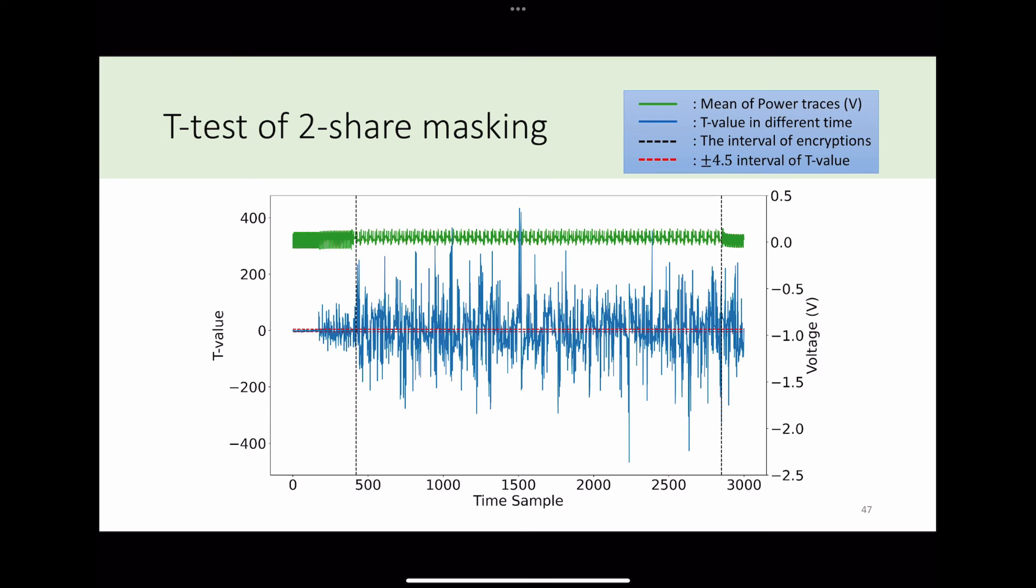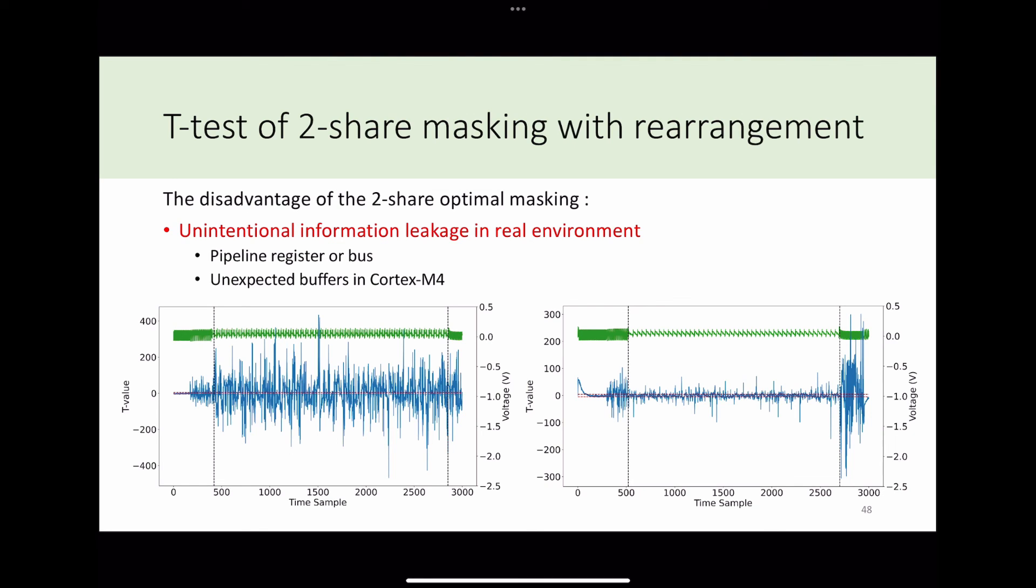Here is the result of two-share optimal masking. It is better than unprotected Gimli, but its t-value exceeds the 4.5 interval, so it is unsecure. However, since we suspect that the leakage is caused by pipeline registers, rearrangement of instructions may reduce the leakage. After rearrangement of instructions, the t-value is much better than the previous version, but it still exceeds the 4.5 interval.